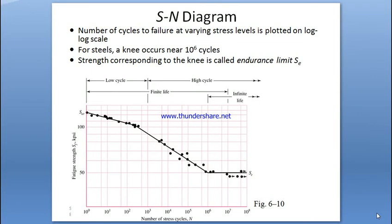In this video we're going to explain the endurance limit modifying factors, which are the Marin factors. The endurance limit, also called the fatigue limit (SE), is obtained from a table in the book. However, this theoretical value is not practical — it requires modification factors due to discontinuities in the system, such as cracks, notches, surface finishing, and size effects.